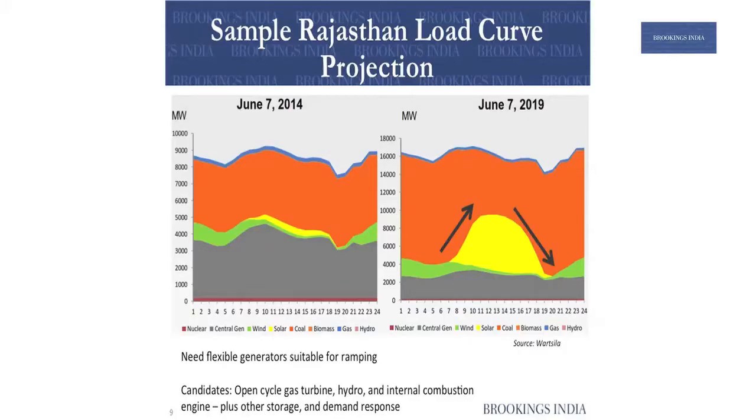Now if you overlay it, looking at coal and RE, this is a curve showing 2014 real data and extrapolating to 2019. Right now solar is a small portion, but as solar grows as per projections to X thousand megawatts, we see that it creates a ramp-up and a ramp-down requirement. Either coal will have an implication on its plant load factor, or we need other generators suitable for ramping — typically one of three: open cycle gas turbine, hydro, or internal combustion engines. And of course people also talk about storage and demand response as other candidates.